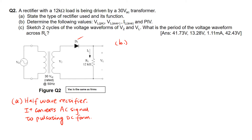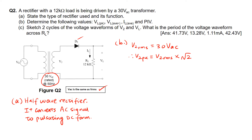To find VL peak, we first need to find V2 peak. We are given 30V AC, which belongs to V2 RMS. So V2 RMS is 30V AC. Note that VAC is the same as VRMS. Therefore, to find V2 peak, we take V2 RMS multiplied by √2. This gives us 30V AC × √2, which equals 42.43V.